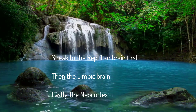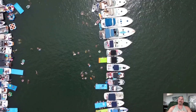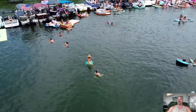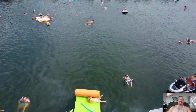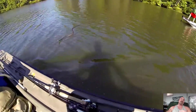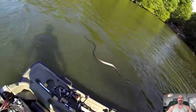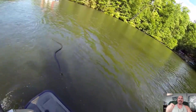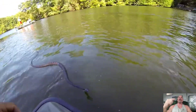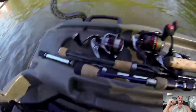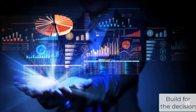This brain can make survival decisions before you or the other brains can even begin to process the data. I know this firsthand: we were out at the lake, I was floating on a raft talking with friends and family. I felt something brush my leg, and before I could look and see, I had reached down, grabbed, and thrown a four-foot water snake at least 30 feet across the water. I literally grabbed and threw a snake before my neocortex could even register that I had a snake on my lap. That's the reptilian brain.